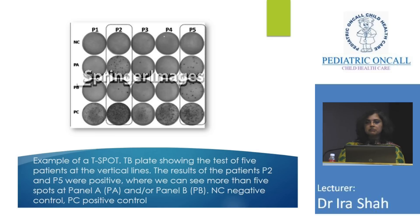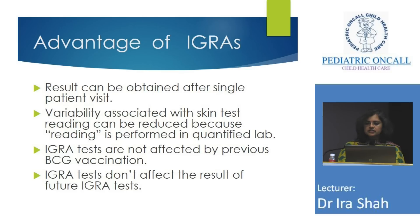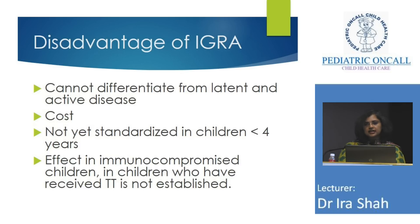Advantages of IGRA: single visit, patient just gives a blood sample, not affected by BCG. One IGRA positive does not mean every subsequent IGRA will be positive, unlike MANTU which can remain positive for years. Disadvantages: like MANTU, it doesn't tell us disease activity and cannot differentiate between latent and active TB. It's not yet standardized in children less than four years, and its effect in immunocompromised patients or those who have received AKT is still not established.